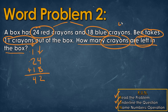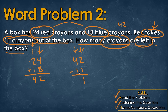Now that is for how many crayons we started with. But then we see that Ben takes 11 crayons out of the box. When we see that word takes or out, that's going to mean that we subtract. So we're going to take 42 and subtract 11 from it. We always start with the right — 2 minus 1 will give us 1. We move over to the next column: 4 minus 1 is going to be 3. So our final answer is going to be 31 crayons.